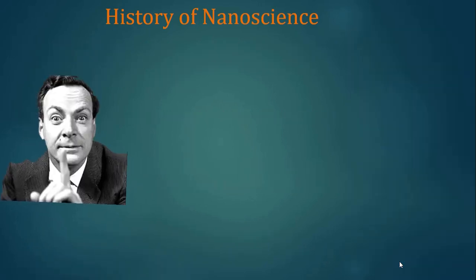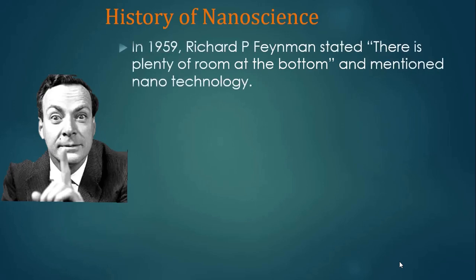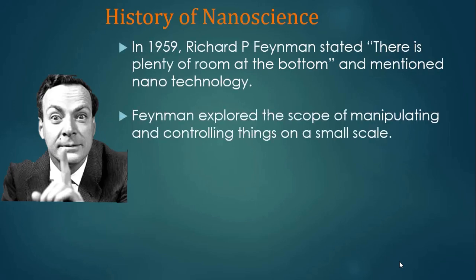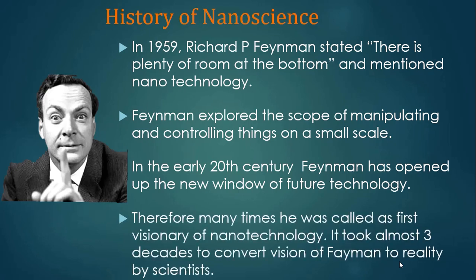This is Richard P. Feynman. In 1959, Richard Feynman stated that 'there is plenty of room at the bottom,' and he first mentioned the word nanotechnology. Feynman explored the scope of manipulating and controlling things on a small scale. He opened up a new window of future technology and is therefore often called the first visionary of nanotechnology. It took almost three decades to convert Feynman's vision to reality — scientists became able to move atoms.